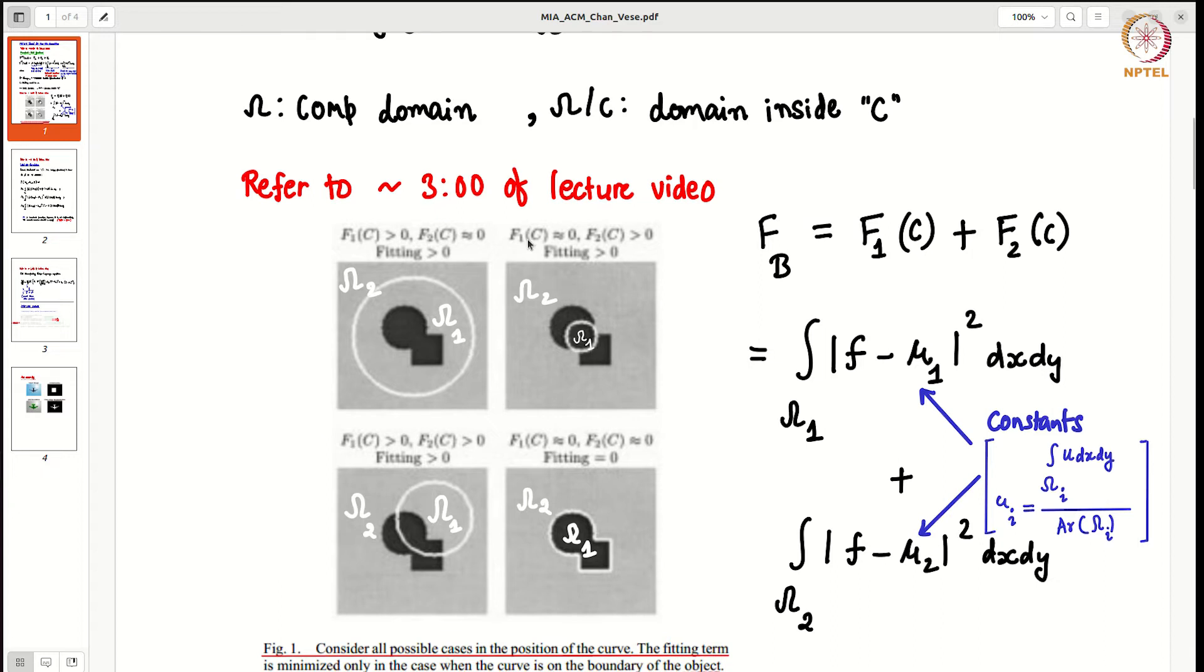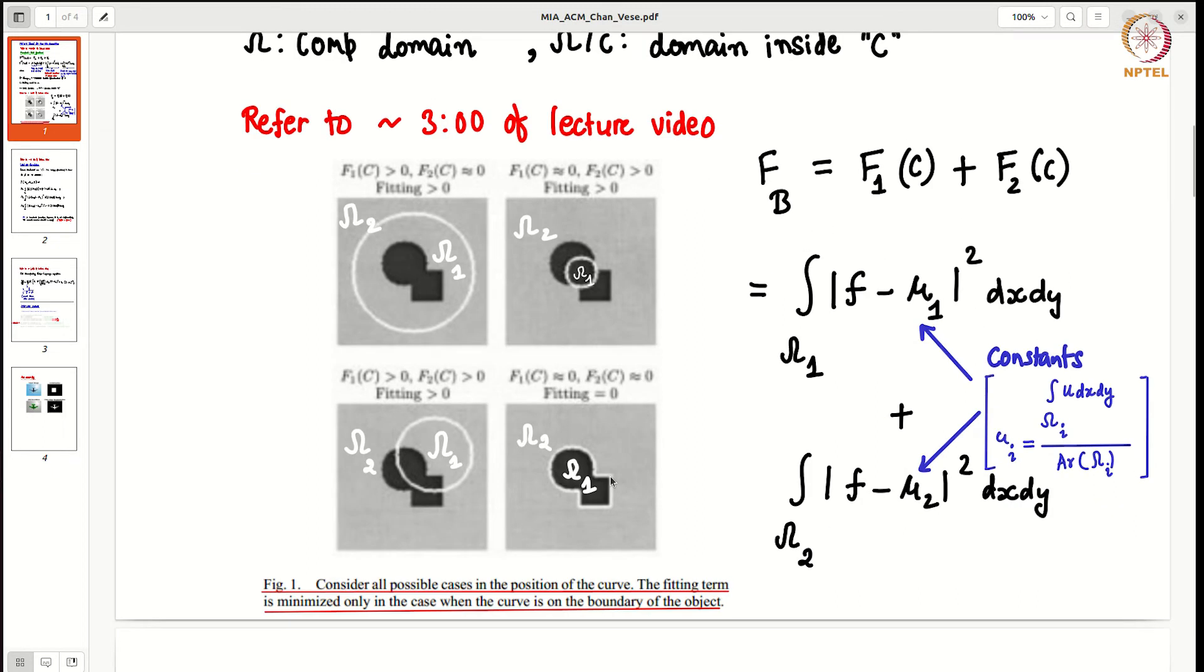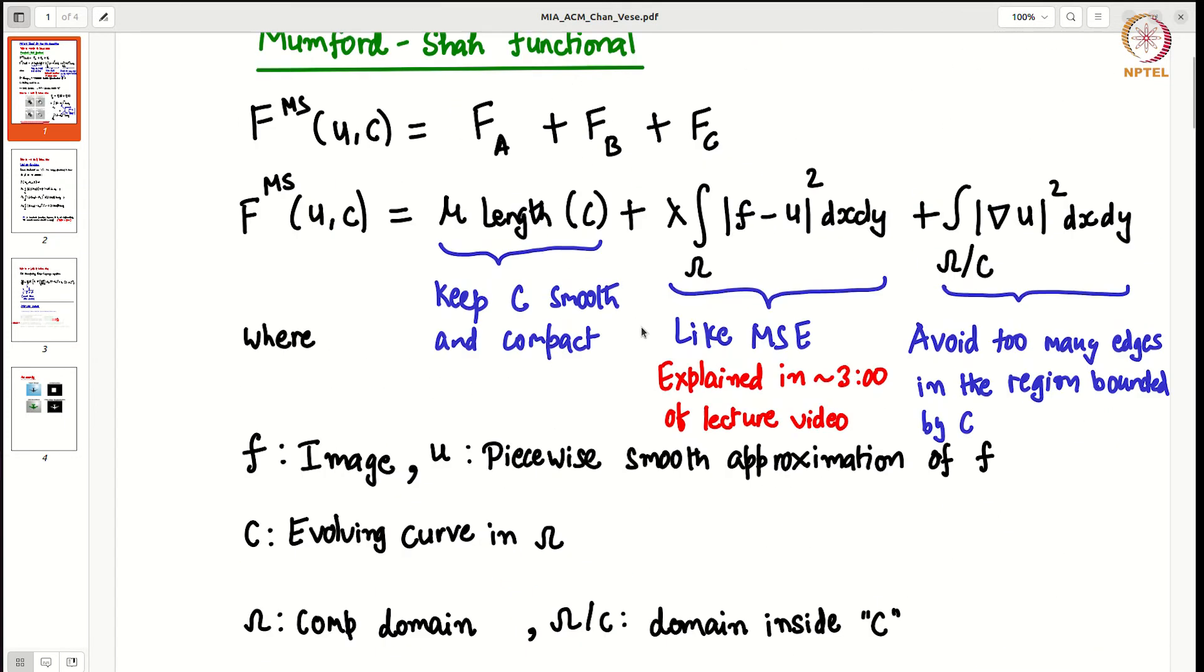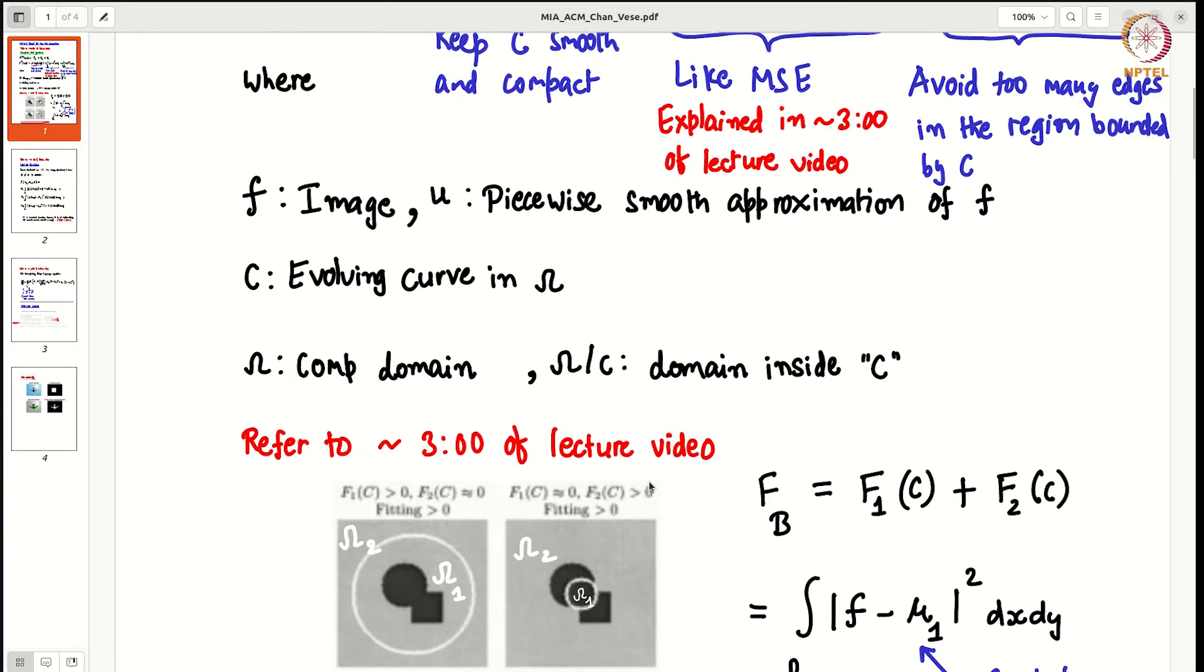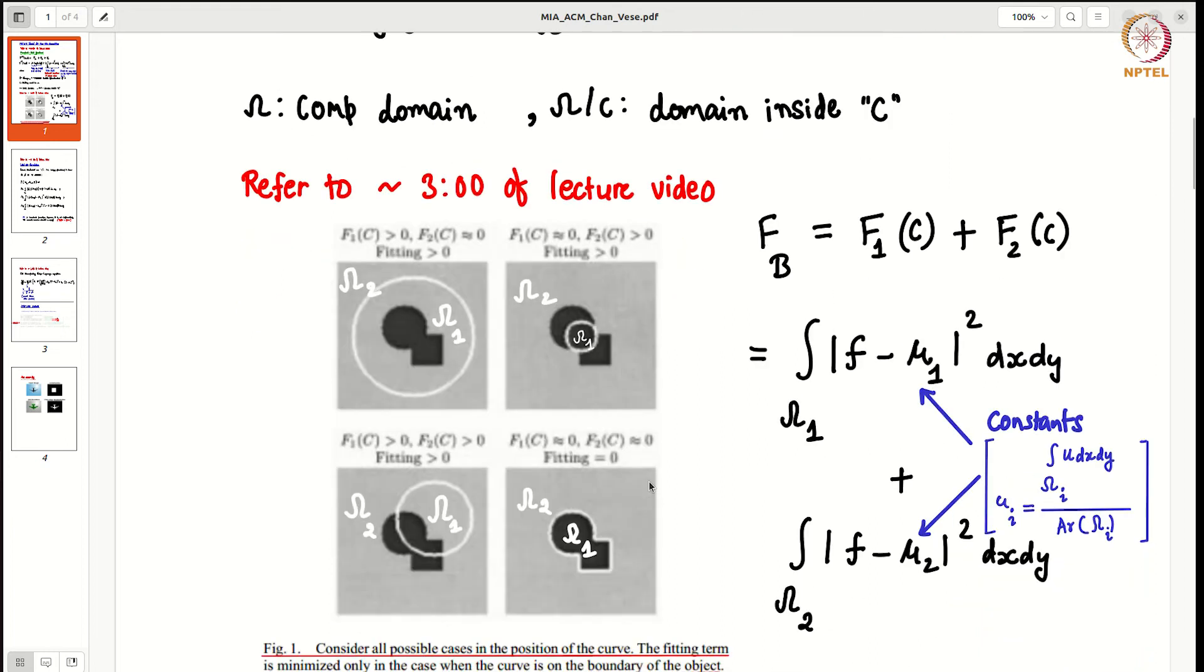In the second case, omega 1 contains only black pixels, so that is why F1C is close to 0, but F2C will not be 0. You can see the fitting term is minimized only in the case when the curve is on the boundary of the object. That is the purpose of this functional term. That is the main hallmark of this Chan-Vese segmentation model, this Mumford-Shah functional.